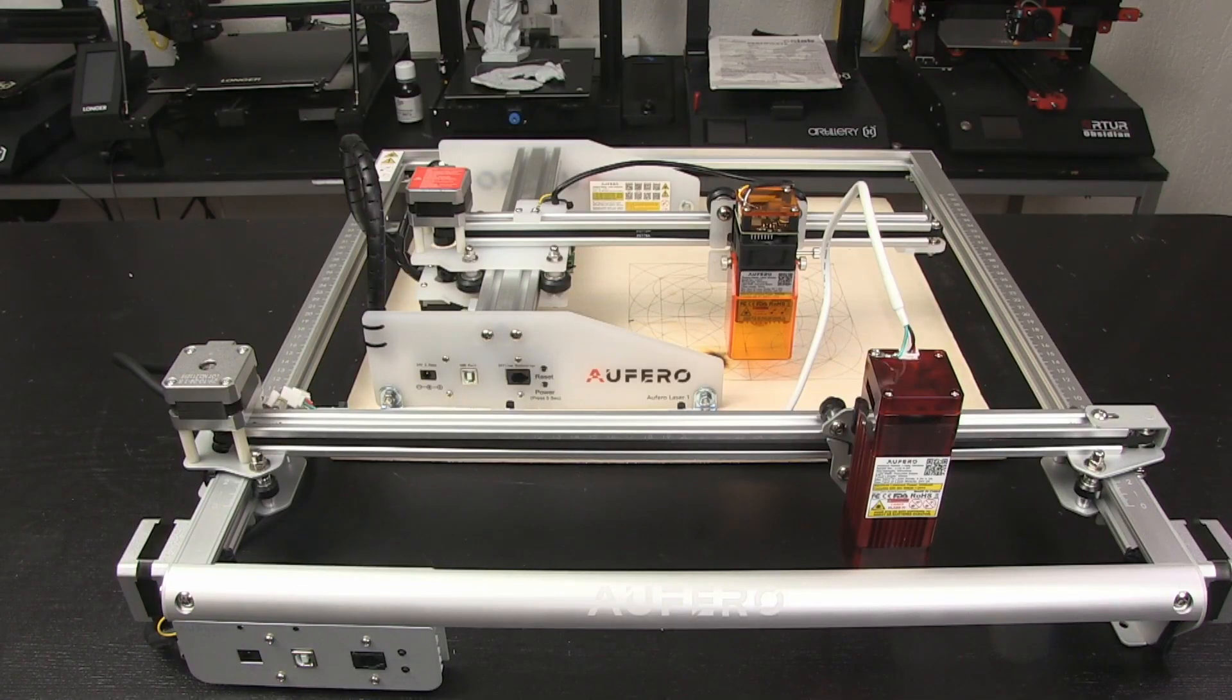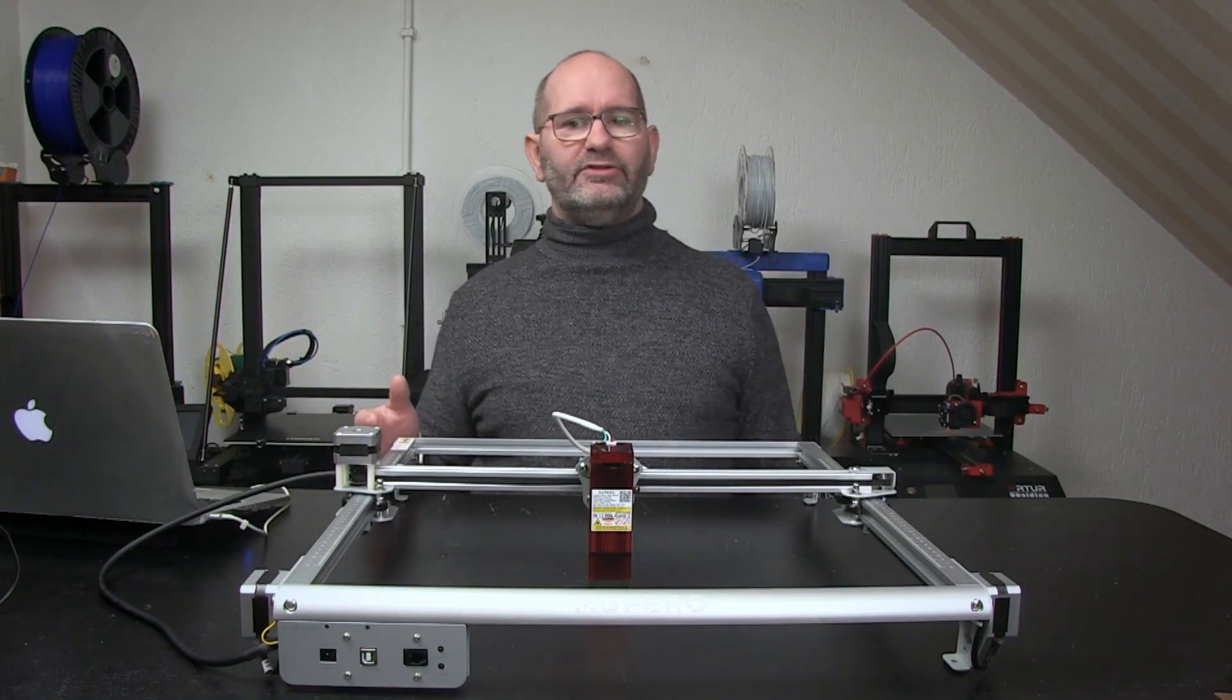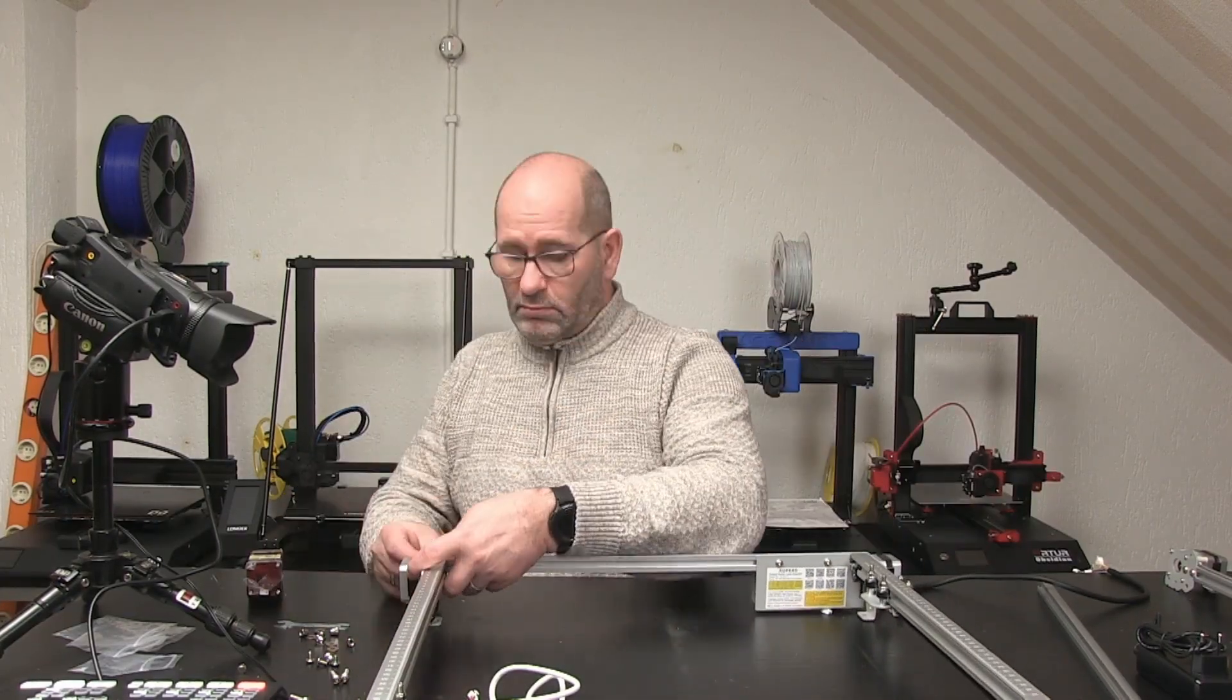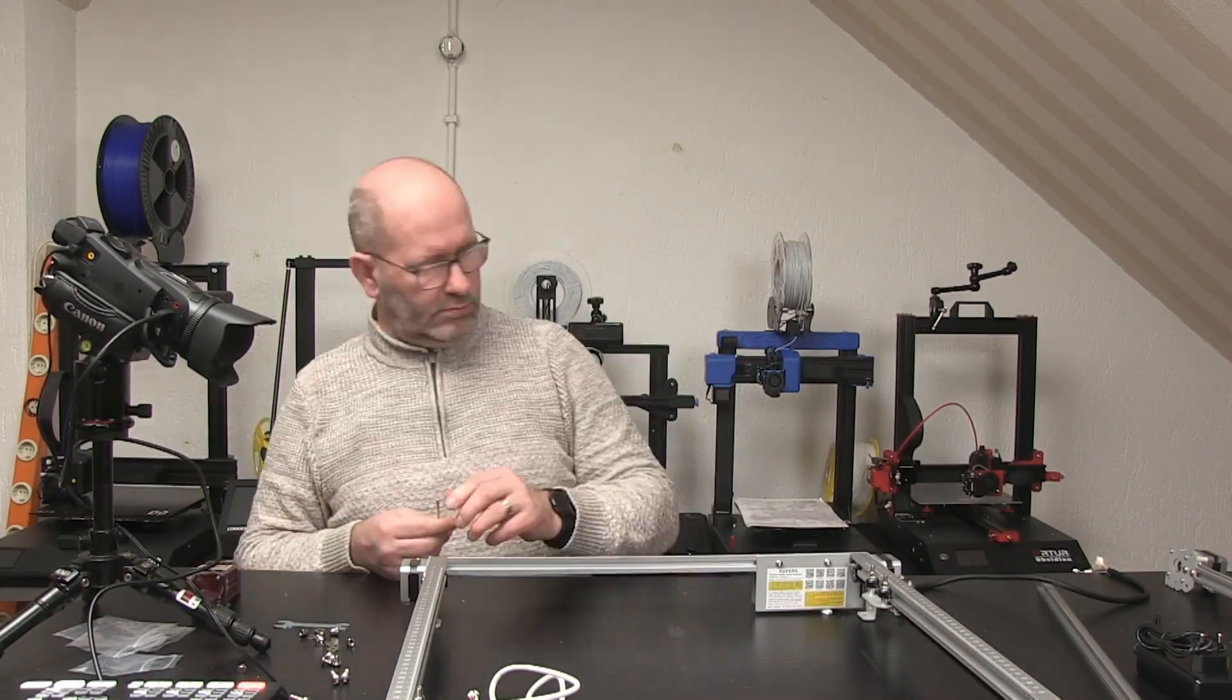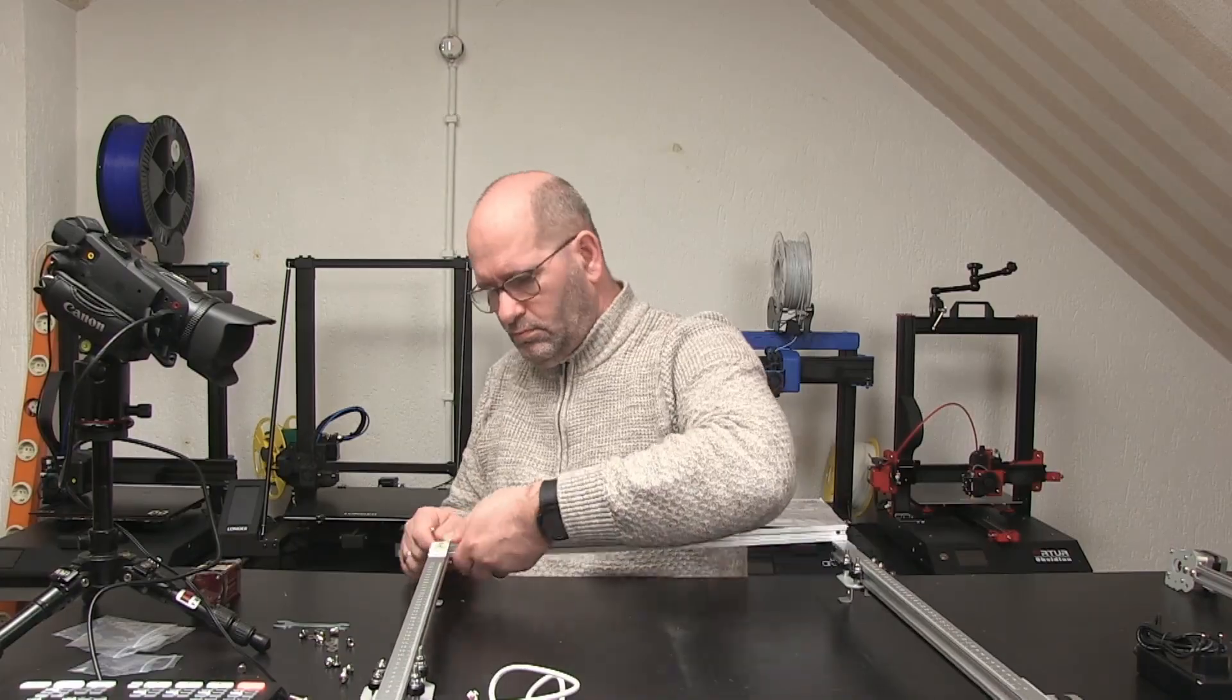The Alfaro Laser 2 is the bigger brother of the Alfaro Laser 1 in terms of size, as this machine has an engraving area of 390 by 390 mm and the machine comes as a kit that you have to put together, yet most of it is pre-assembled so you only have to connect the extrusions with 8 screws and the wires of course.